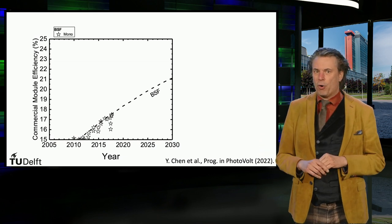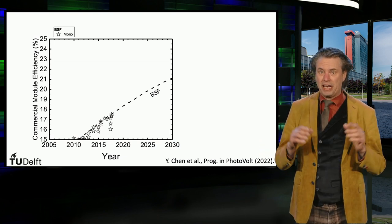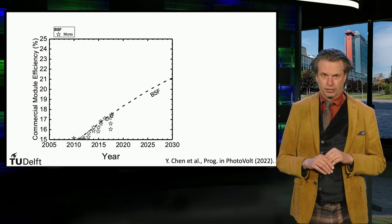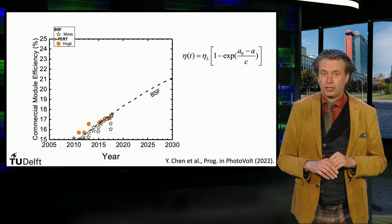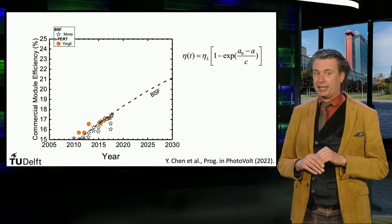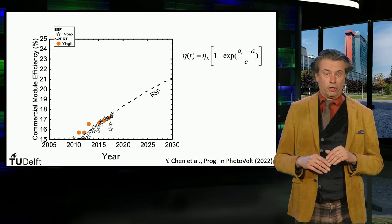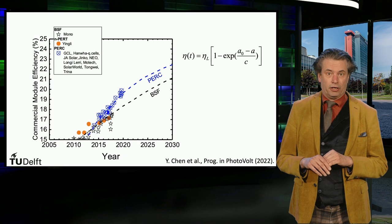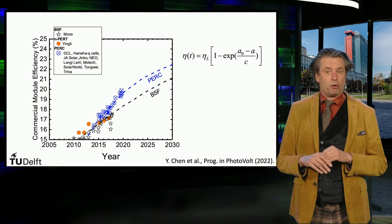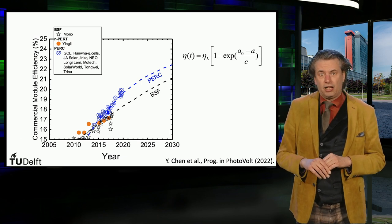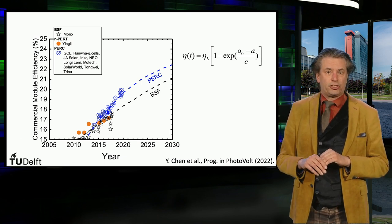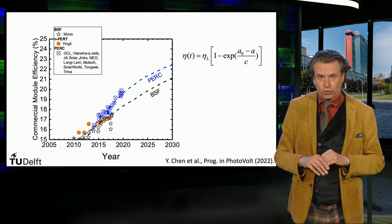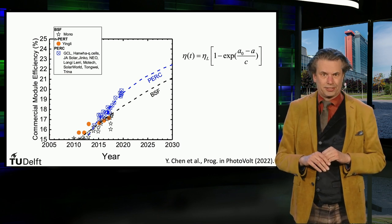However, monocrystalline silicon wafers have been mainly used for other crystalline silicon technologies, like the NPERT produced by Yingli, or the PERC crystalline silicon technology produced by companies like GCL, Hanwha Q-cells, JA Solar, Jinko, NIO, Motech, SolarWorld, Tongwei, and Trina Solar.